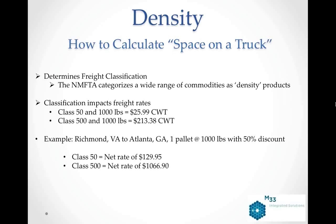A class 50 product — your higher density products — at 1,000 pounds on the CZar 10-1 2000 rate base would yield a rate per 100 weight of $25.99. The opposite end of the spectrum, class 500, which carries a lighter density at 1,000 pounds, would carry a rate per 100 weight of $213.38. For example, Richmond, Virginia to Atlanta, Georgia, one pallet of 1,000 pounds at a 50% discount: the class 50 net rate would be $129.95, while the class 500 net rate would yield $1,066.90. You can see there's a huge variation by class.